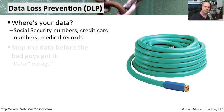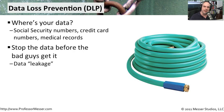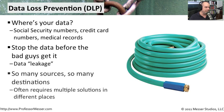The idea is that this information can get out. The bad guys want that info — it is extremely valuable to them. If they can get access to credit cards, social security numbers, and other important information, they can take advantage of that. That type of information getting out is called data leakage, and that's what you want to prevent. To prevent it, we need to think about all of the different places where this data might be.